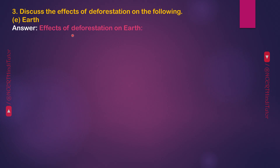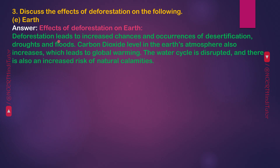Effects of deforestation on Earth: Deforestation leads to increased chances and occurrences of desertification, droughts and floods. Carbon dioxide levels in the Earth's atmosphere also increase, which leads to global warming. The water cycle is disrupted and there is also an increased risk of natural calamities.